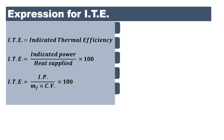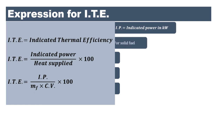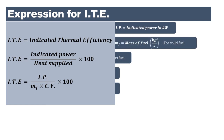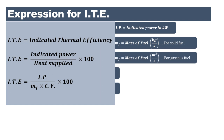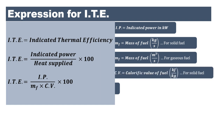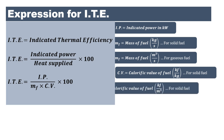Indicated thermal efficiency is defined as the ratio of indicated power to the heat supplied. So it is IP divided by (mf × CV), where IP is indicated power in kilowatt, mf is mass of fuel in kg per second (or m³/s for gaseous fuel), and CV is calorific value — in kilojoule per kg for solid fuel or kilojoule per meter cube for gaseous fuel.